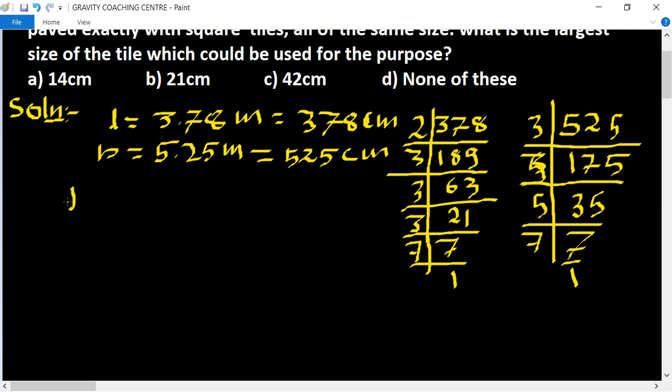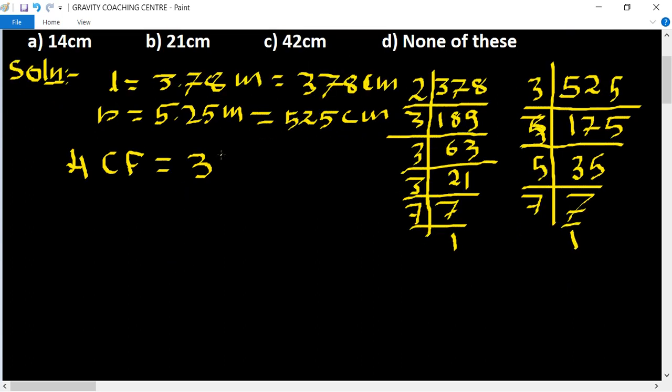So what will be the HCF? 3 is common and 7 is common. So 3 into 7 equals 21 cm. Hence the largest size of the square tiles is 21 cm. The answer is option B. Thank you for watching.